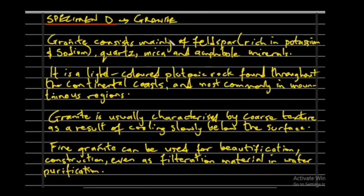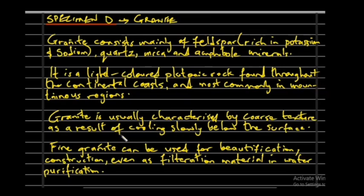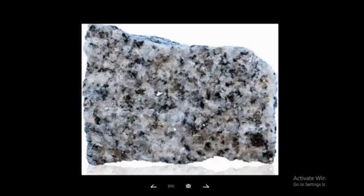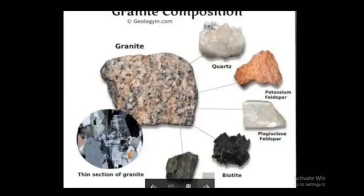Specimen D is granite. Granite consists mainly of feldspar, which is rich in potassium and sodium. It also contains quartz, mica, and amphibole minerals. It is a light-colored plutonic rock found throughout continental crust, most commonly in mountainous regions. Granite is characterized by a coarse texture as a result of slow cooling below the Earth's surface. Fine granite can be used for beautification, construction, and even as filtration material in water purification.